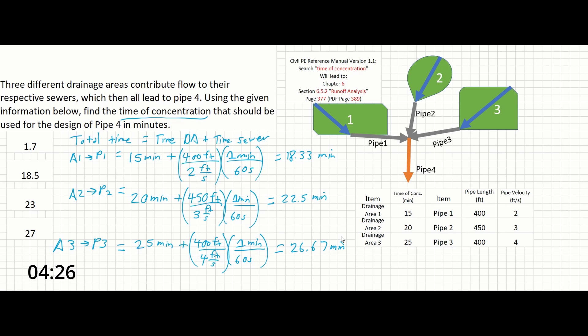Now our closest answer over here is going to be 27. The other answers that came out are the other two drainage areas, and finally, just the amount of time coming from the pipe for Pipe 3. So, as long as you don't fall for any of that, and you recognize that the time of concentration is the longest time for this pipe among all of the contributory areas and pipes, that's really all this question's testing you on. And that's all there is to solve this problem.